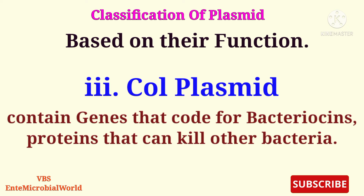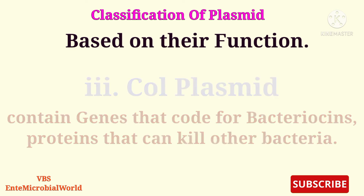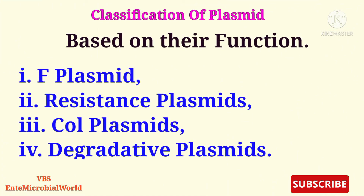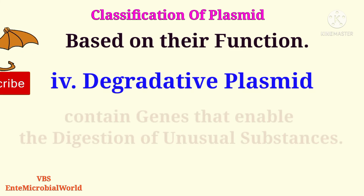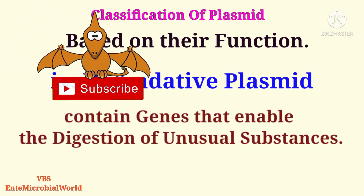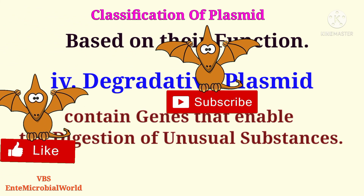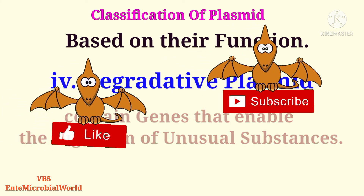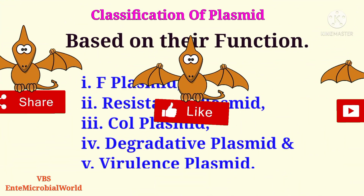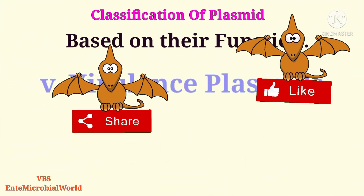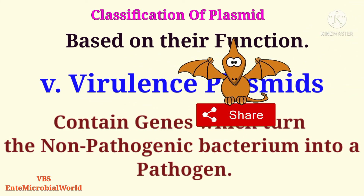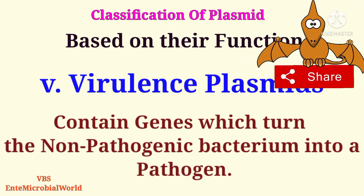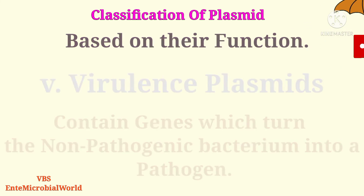Col-plasmids contain genes that code for bacteriocins, which are proteins that can kill other bacteria. Degradative plasmids contain genes that enable the digestion of unusual substances. Virulence plasmids contain genes which turn a non-pathogenic bacterium into a pathogen.